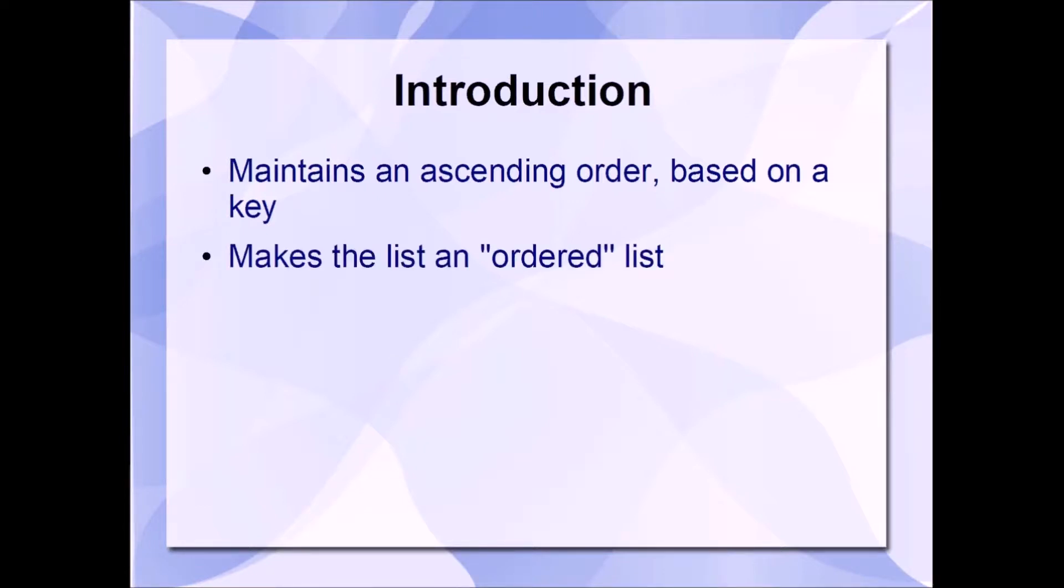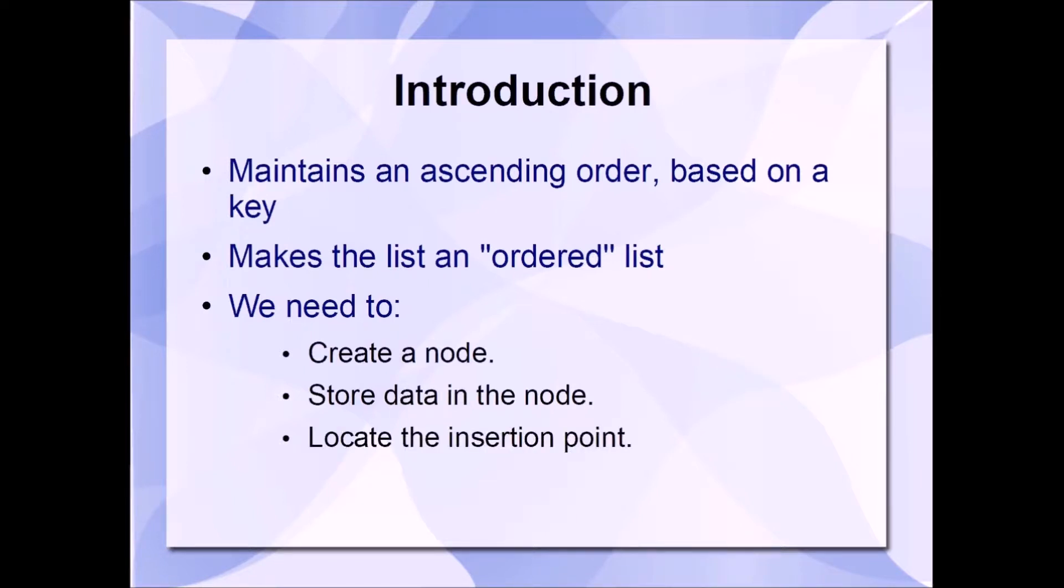This means that this list is going to be an ordered list. In order to accomplish this, we're going to need to do a few things. We're going to need to create the node, store the data in the node, locate the insertion point, and we'll use a loop to do that. And then finally, we'll need to insert the node.